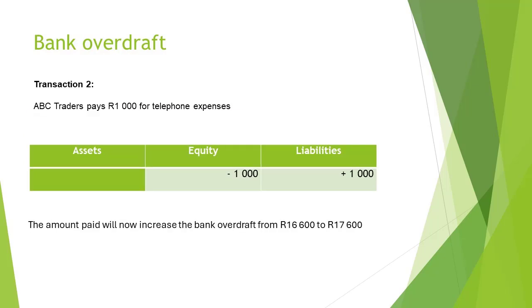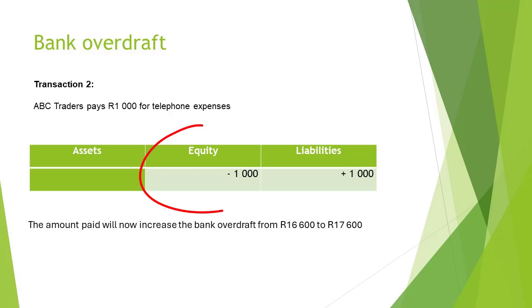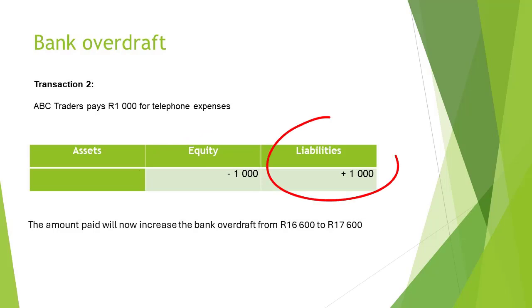In transaction 2, ABC Traders paid 1,000 Rand for telephone expenses. Telephone expenses are classified as expenses. The equity account will therefore decrease with the amount paid for the expense. The bank account will be credited with 1,000 Rand. Liabilities will therefore increase since the amount paid will increase the bank overdraft.